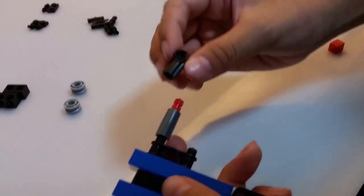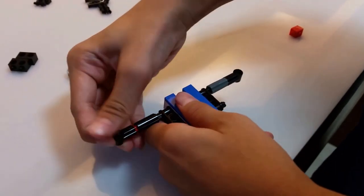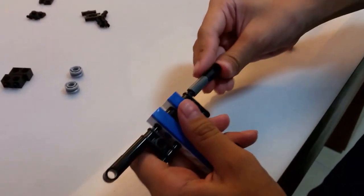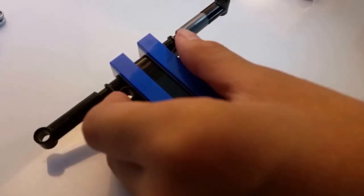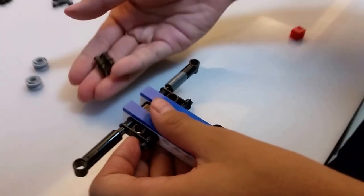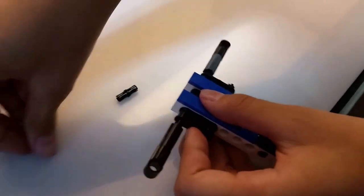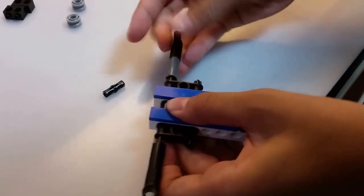Next, have this piece and make sure the circle is pointing upwards like that. Now take two of these black pieces here and put them on top like so.